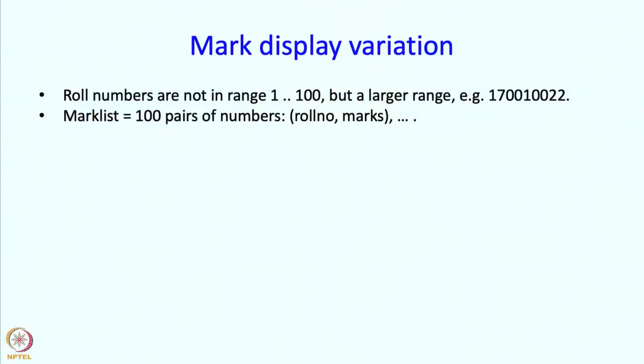The roll numbers occupy a larger range — maybe 10 digits or however many digits your institution uses, and in many institutions roll numbers can contain alphabets even. Let us keep things simple for now: the roll numbers only contain digits and are at most 9 digits long, so they are actually numbers that can fit in an int variable. The teacher now has to type in not just the marks but also the roll number, because there is no implicit roll number for which the ith mark is being typed.